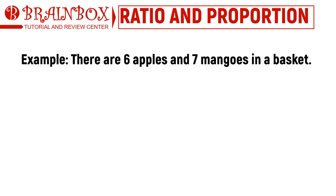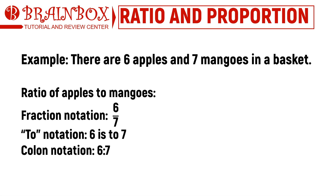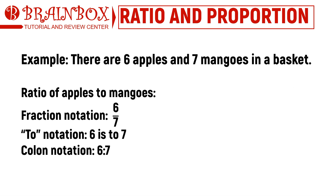For example, suppose there are six apples and seven mangoes in a basket. We can write the ratio of apples to mangoes, or of mangoes to apples, these ways: ratio of apples to mangoes — fraction notation: 6/7, 'to' notation: 6 is to 7, colon notation: 6:7. Ratio of mangoes to apples — fraction notation: 7/6, 'to' notation: 7 is to 6, colon notation: 7:6.